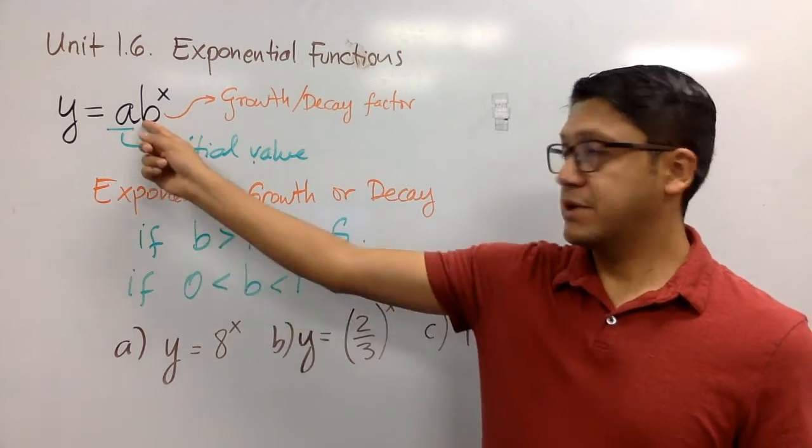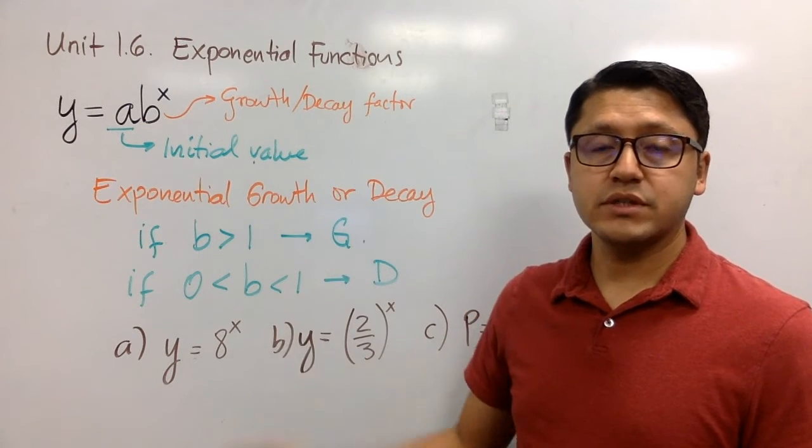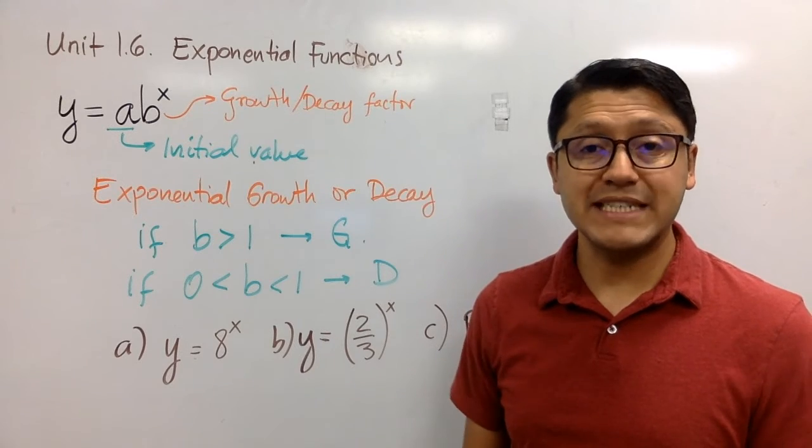When B, I mean this value, is greater than 1, we're talking about growth. When B is between 0 and 1, we're talking about decay.